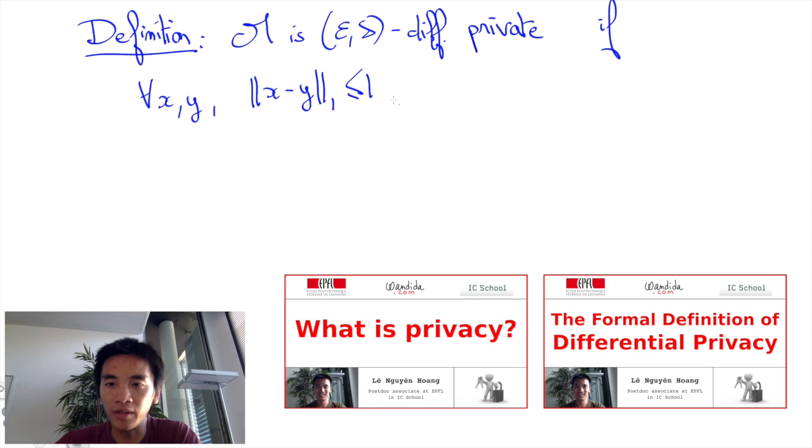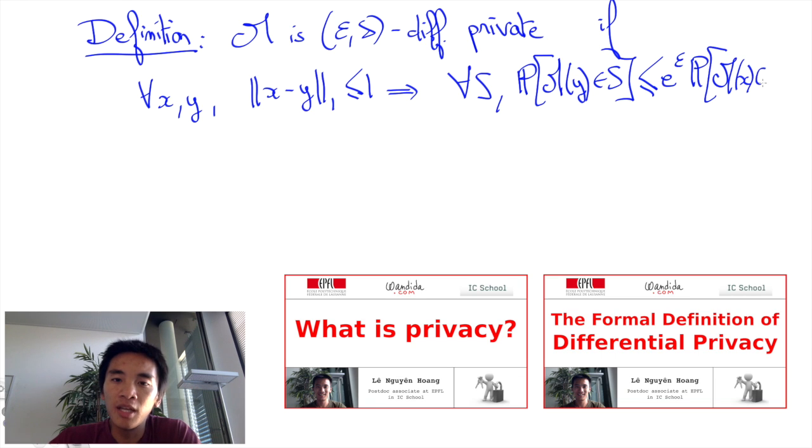That is, x minus y in norm 1 is at most 1, and for any subset s of possible responses of the mechanism, we have the probability that m is in s is at most e to the epsilon times the probability that m is in s plus delta.